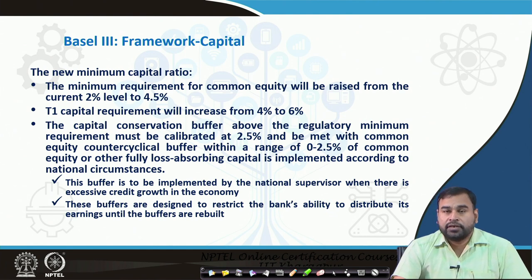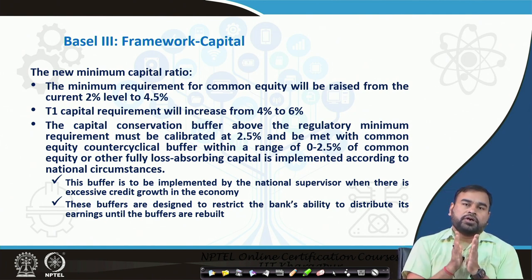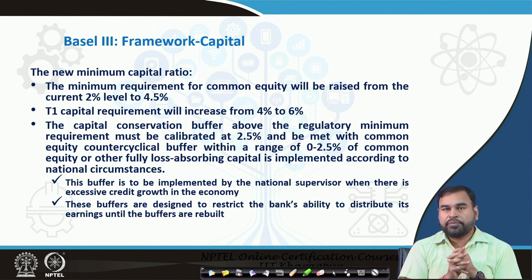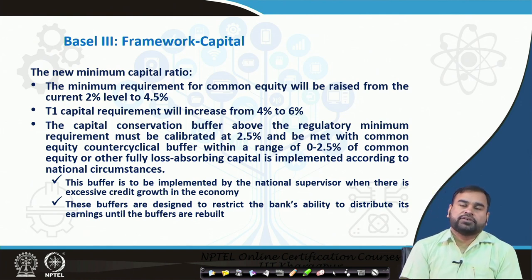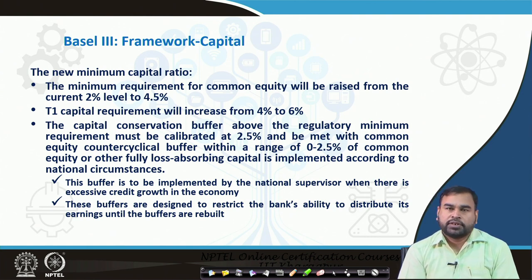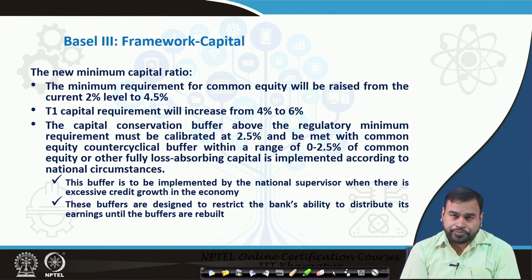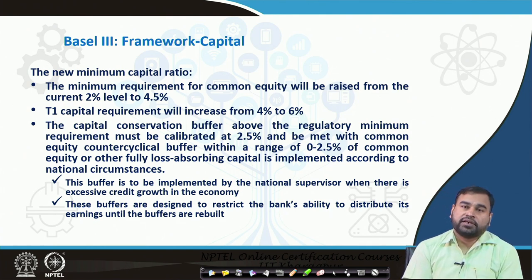The Basel 3 recommendations: it has kept the minimum 8 percent capital adequacy ratio as before. The minimum common equity, which was 2 percent before, has been increased to 4.5 percent. The tier 1 capital, which had a minimum of 4 percent, has been increased to 6 percent. These are the major changes — Basel 3 has always given importance to tier 1 capital and has also narrowed down the definition of tier 1 capital from Basel 2 to make the system more stringent.